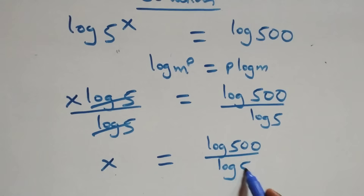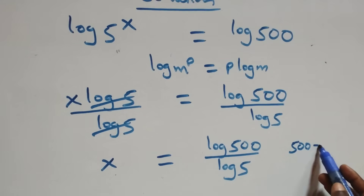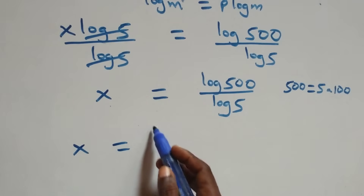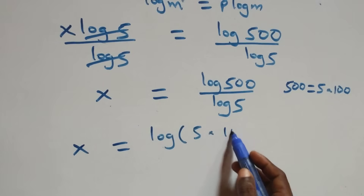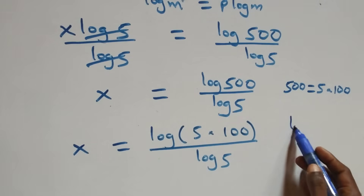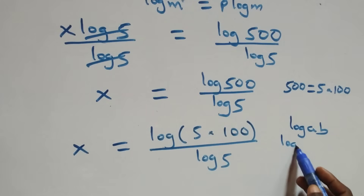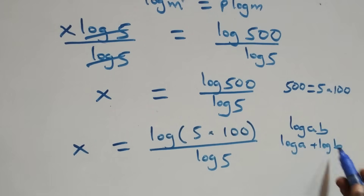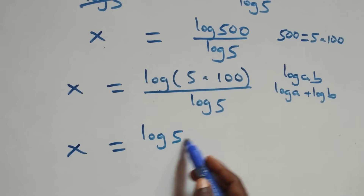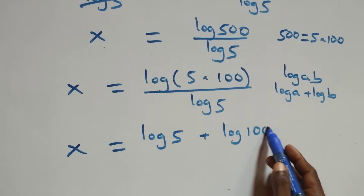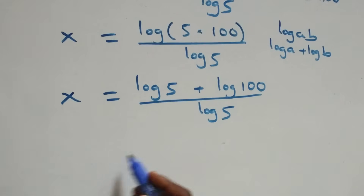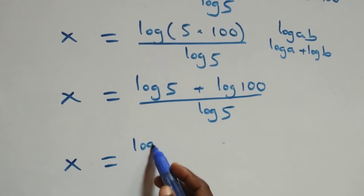The next step: we can write 500 as 5 times 100. This becomes x equals log(5 times 100) over log 5. This follows the product rule of logarithms, so we have x equals log 5 plus log 100, all over log 5.